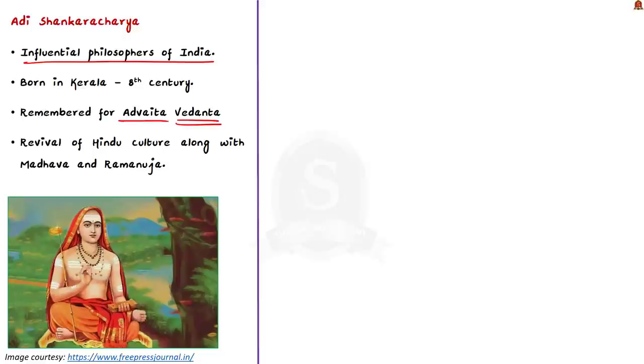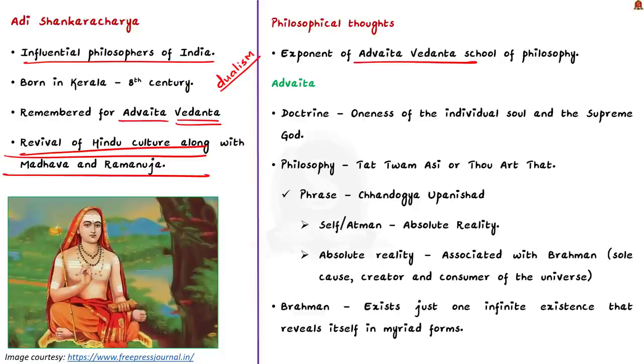Adi Shankaracharya is one of the most influential philosophers of India. He was born in Kerala in the 8th century. Adi Shankaracharya is remembered for establishing the Advaita Vedanta. He did this at a time when Hindu culture was on the decline. Dvaita means dualism and Advaita means non-dualism. Adi Shankaracharya along with Madhava and Ramanuja played an important role in the revival of Hinduism. They are considered as the most powerful figures in recent history of Hindu philosophy because their doctrines are still followed by their respective sects even till date.